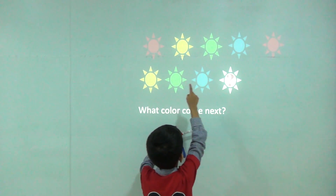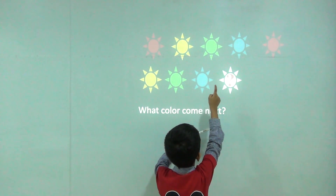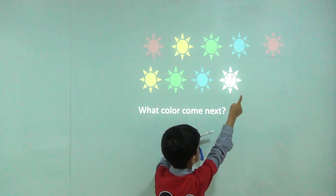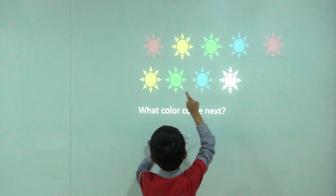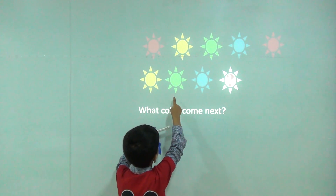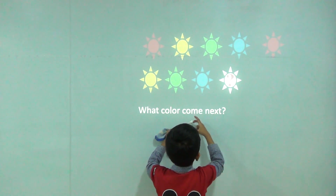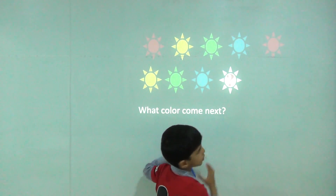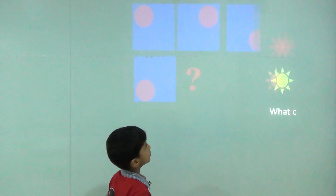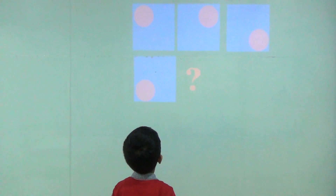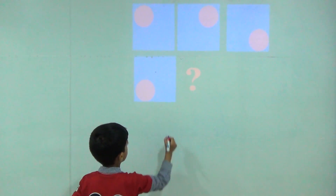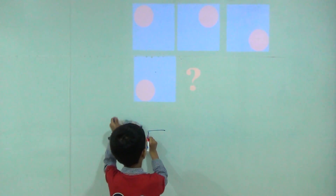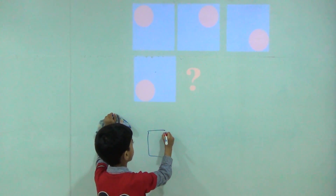Red sun, yellow sun, green sun, blue sun. Red sun, yellow sun, green sun, blue sun. So here would be red sun. Red sun, green sun. This is moving clockwise.